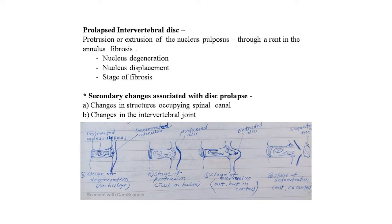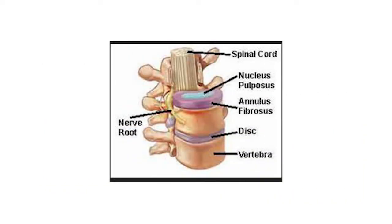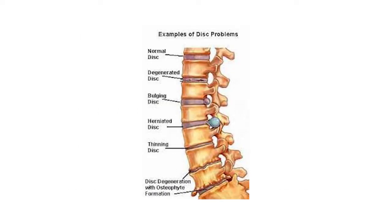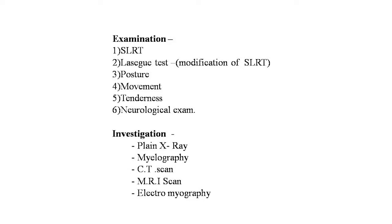Images show the nerve root, spinal cord, nucleus pulposus, annulus fibrosus, disc, and vertebra. Another image shows the subarachnoid space structures: anterior and posterior spinal ligaments, vertebral body, intervertebral disc, cauda equina, and disc bulge. An MRI film clearly shows prolapsed intervertebral disc. Additional images demonstrate normal disc, degenerative disc, bulging disc, herniated disc, thinning disc, and disc degeneration with osteophyte formation.